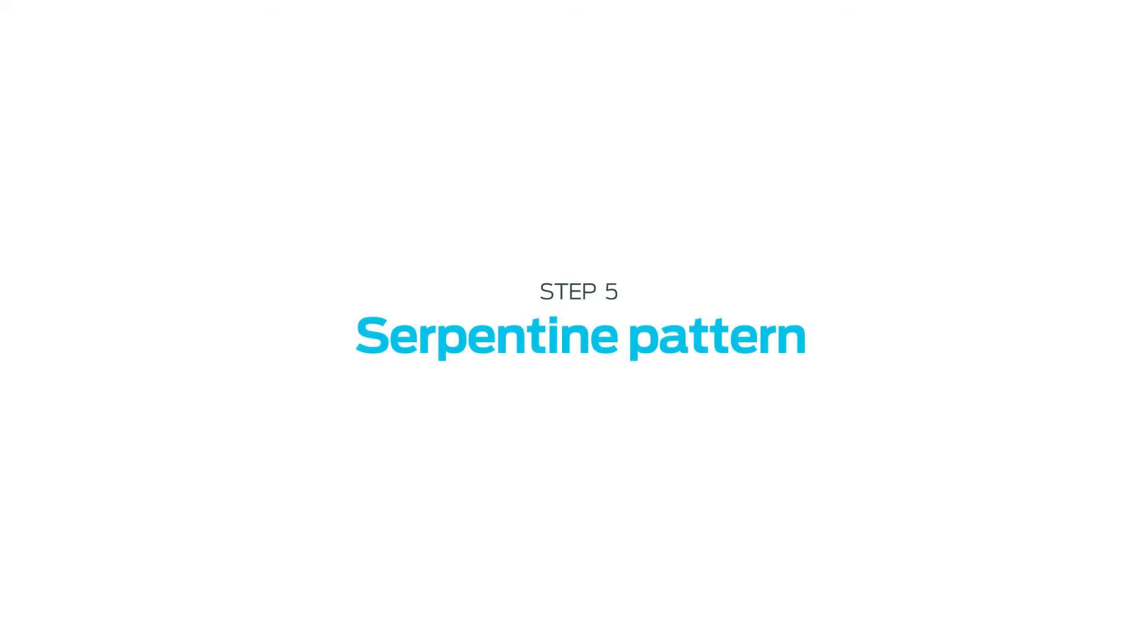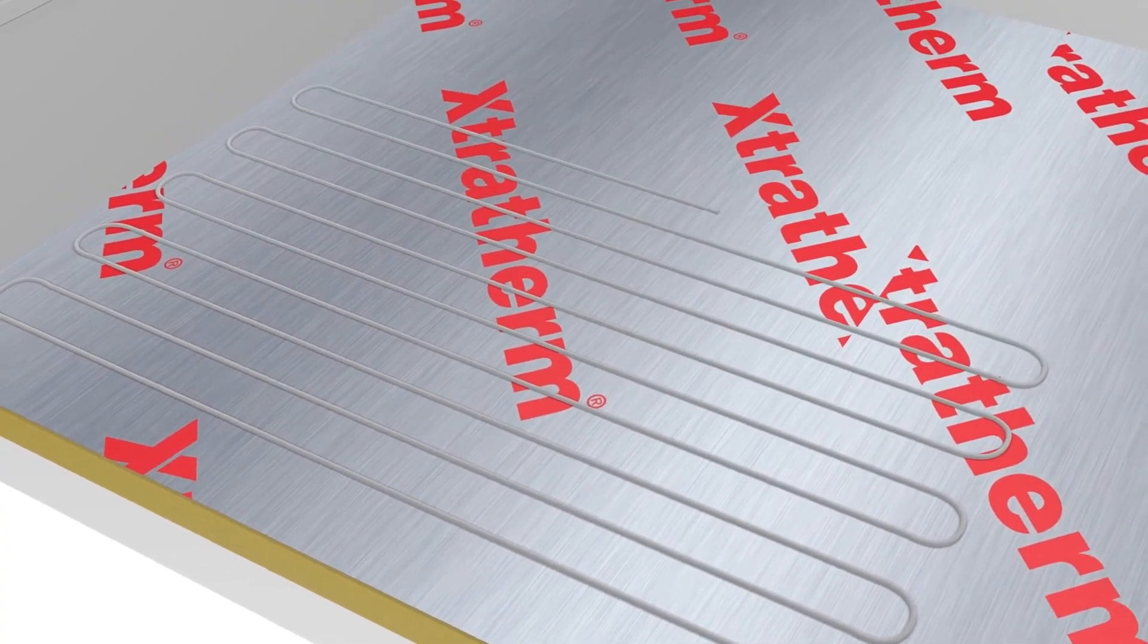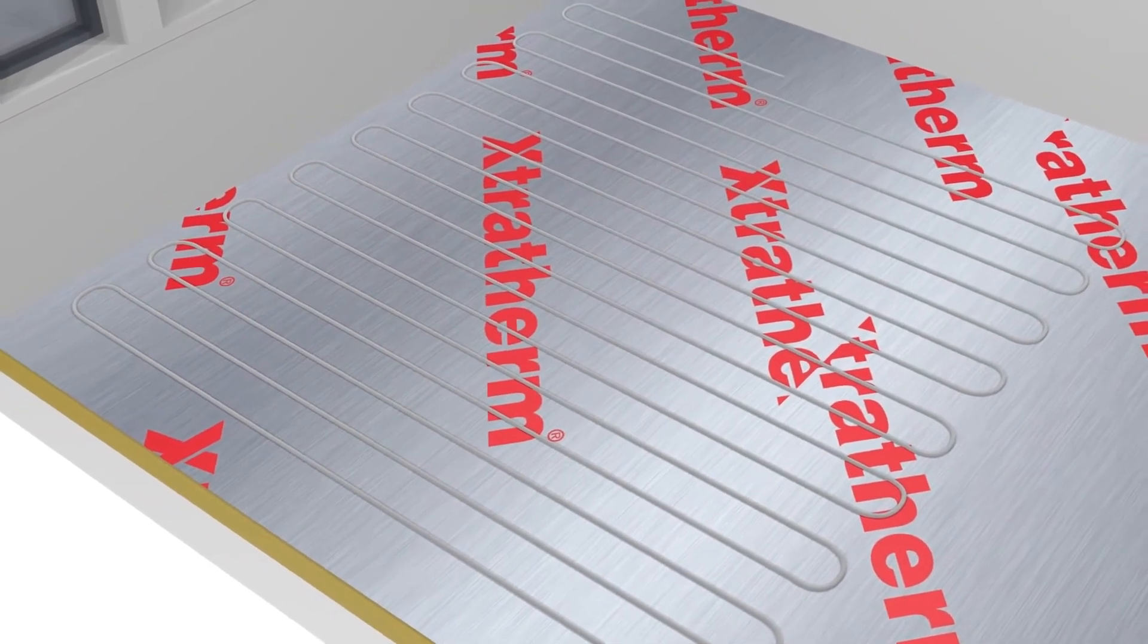Serpentine pattern. This is an example of the serpentine laying method. As you can see, the pipe work is laid in parallel lines and is returned at the end of each run.